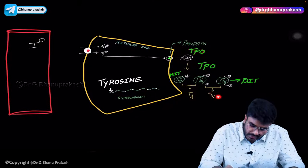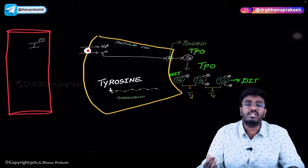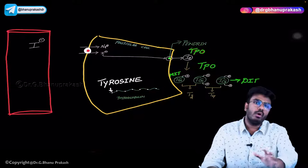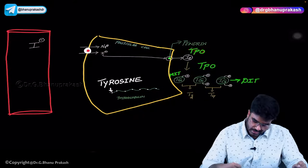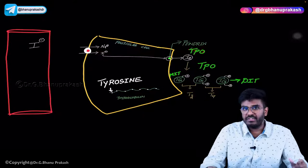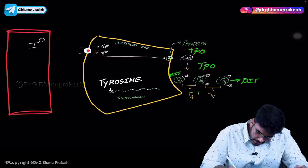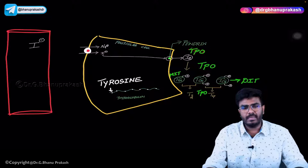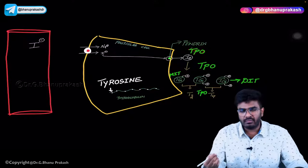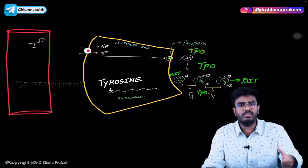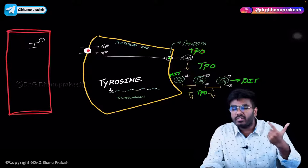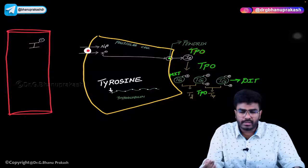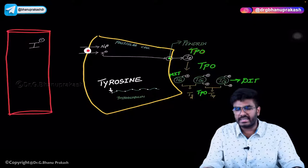Whenever two DIT molecules couple together, you end up with T4 — thyroxine. This is how T3 and T4 are formed. Who performs this coupling reaction? Again, thyroid peroxidase. So TPO is involved in oxidation, organification, and coupling reactions. All three important reactions are under the control of thyroid peroxidase.